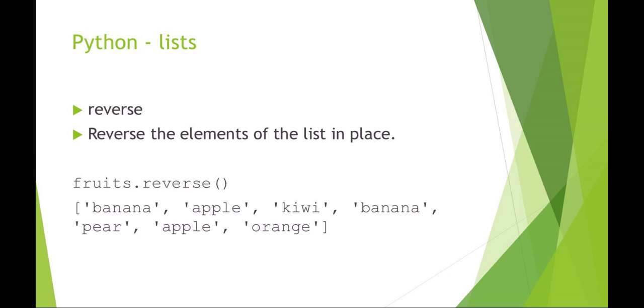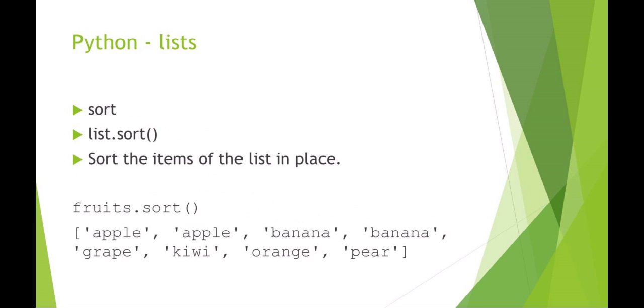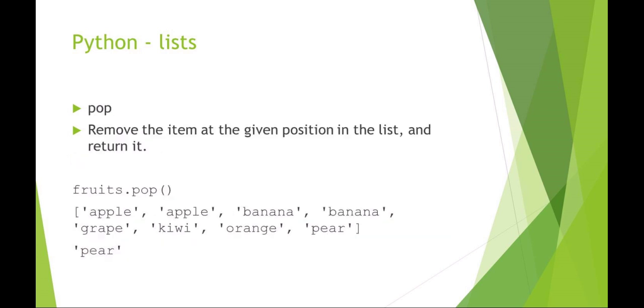There's list.reverse() which is going to reverse the elements in place, so it's going to flip your list. Append is adding items to the end of the list. So in this example I'm adding grapes to my fruit list. Sort is going to sort your list in place. You can see here it's alphabetically sorting my fruit list.